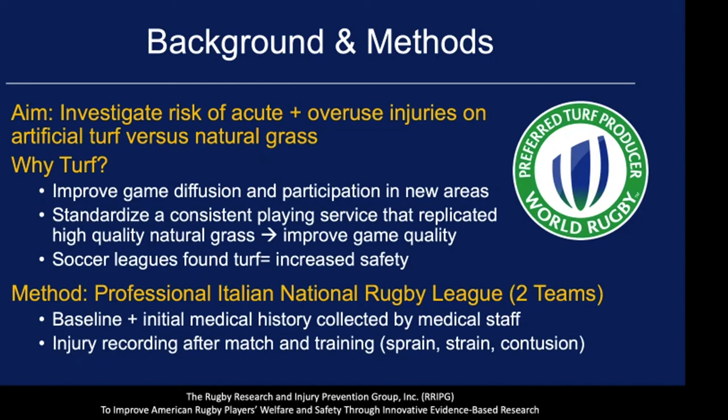Currently, third-generation synthetic turf is being used, comprising a stone-based shock pad, carpet, and rubber infill, ensured to replicate good quality grass. This was enacted by World Rugby's Regulation 22, which insisted on good quality turf being used. This study is also relevant because turf has been examined in European soccer and American football, where it has been reported to significantly increase injury rates.